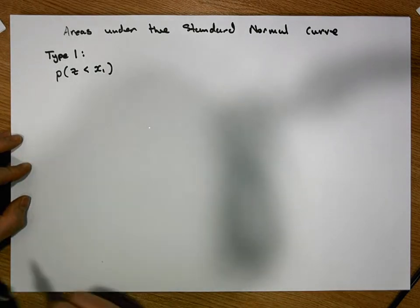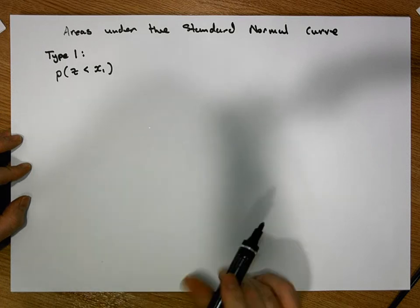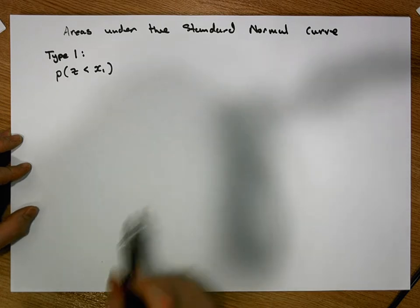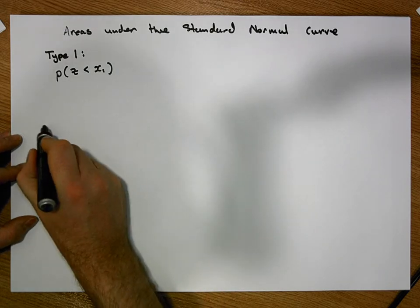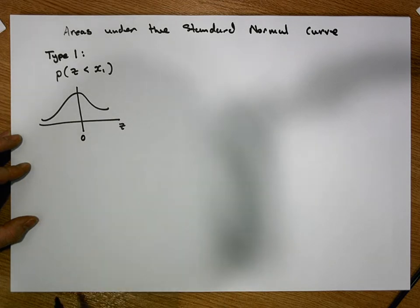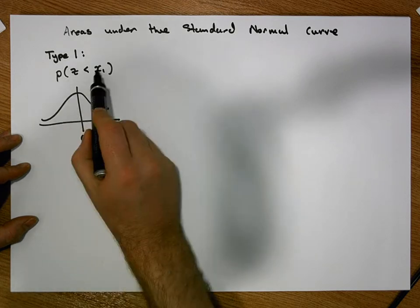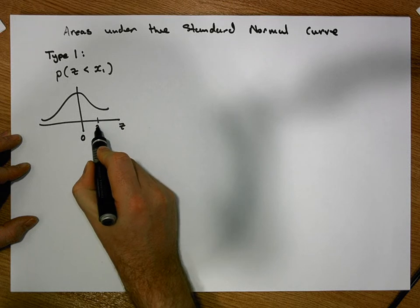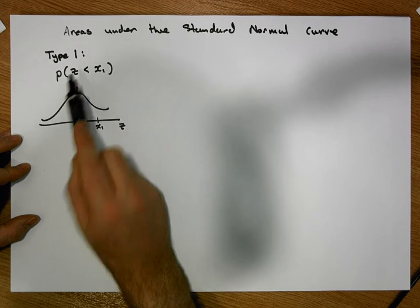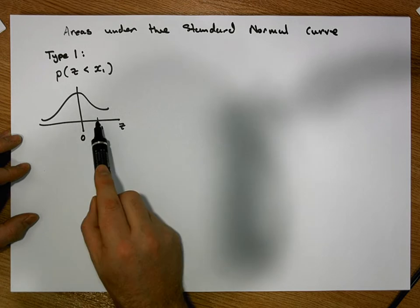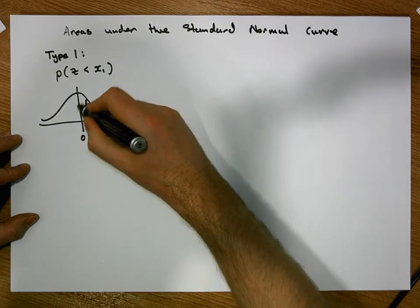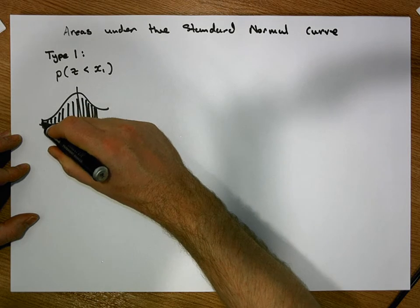If we want to calculate this particular probability, the first thing we should do is build a graphical picture. We're dealing with the z variable, which is the variable associated with the standard normal curve. It's a bell-shaped curve centered on zero. The horizontal axis represents the z variable, and x1 is a positive value so it's on the right-hand side of zero. What we're interested in is calculating the area under the curve to the left-hand side of our positive x1 value.